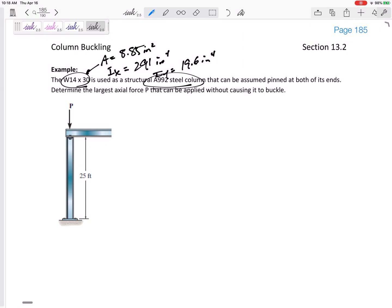And the material will tell us the modulus of elasticity. So this is 29 times 10 to the 3 KSI from the back of the book, and the yield stress, 50 KSI.